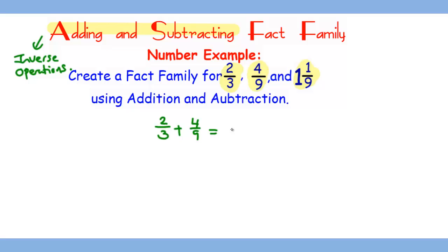Or 4/9 + 2/3 = 1 1/9. Notice how we just switched the order of the numbers, and this is using something called the commutative property.